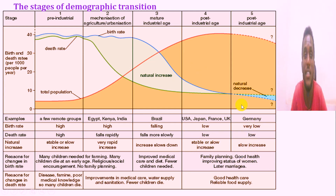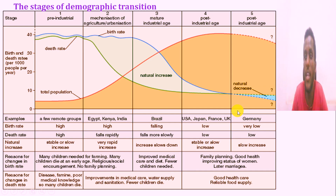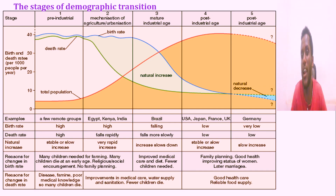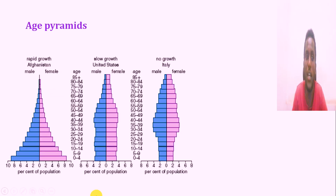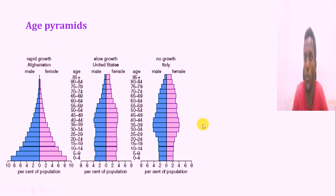The other topic is the age pyramid. The age pyramid has different forms — the first pyramid represents one type of population structure, and the second represents another.